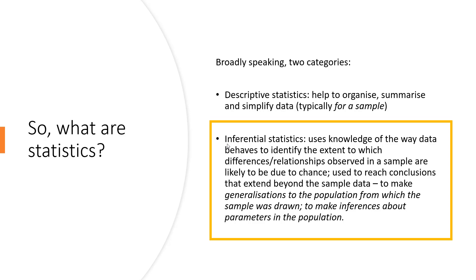Inferential statistics is where we use knowledge about the way data behaves to identify whether values observed in a sample are likely to have occurred by chance, or whether they suggest something about the relationships between variables or differences between groups. If our research is robust, we can use that to make inferences about the parameters in the population.